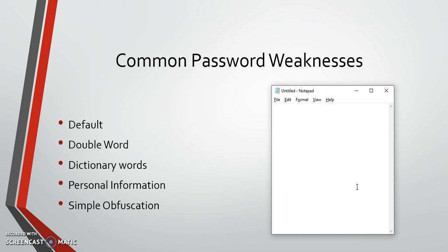Some common password weaknesses: first, default passwords — don't use the default password. A lot of things like routers default to 'admin' or 'password', things like that, so definitely don't do that. Then we move into double words — taking a word and doubling it, like 'doubledouble'. That's an example of a double word. People tend to do that just to increase the length, but it doesn't make it any more complicated.